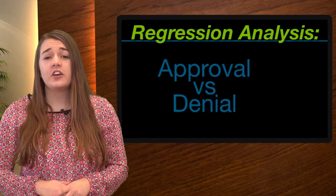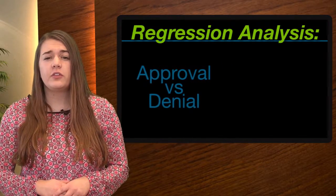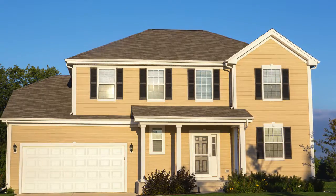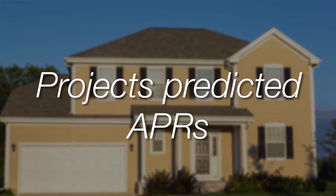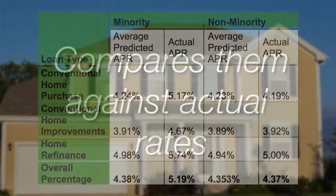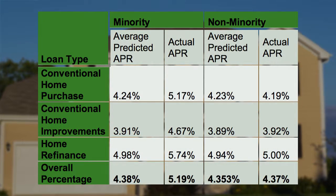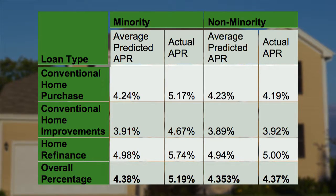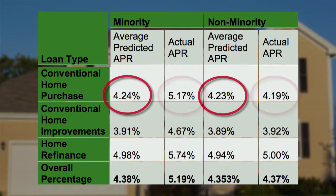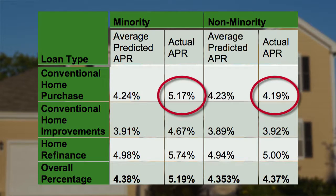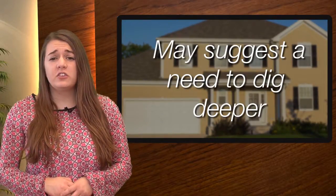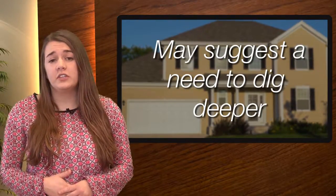Approval versus denial rates are just one area that can be examined more closely through a regression analysis. Another area is a comparison of pricing. Here's an example of how a regression model can project predicted APRs and compare them against actual rates to determine if any disparities occurred, for conventional home purchase loans. In this example, we might see that the predicted APR rates are similar for minority and non-minority applicants, but the actual rate is nearly a full percentage point higher for minority applicants. This may not suggest an actual fair lending problem, but it might suggest an area where the financial institution may want to dig deeper.